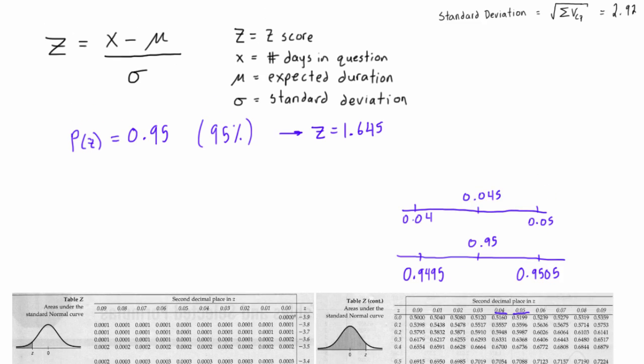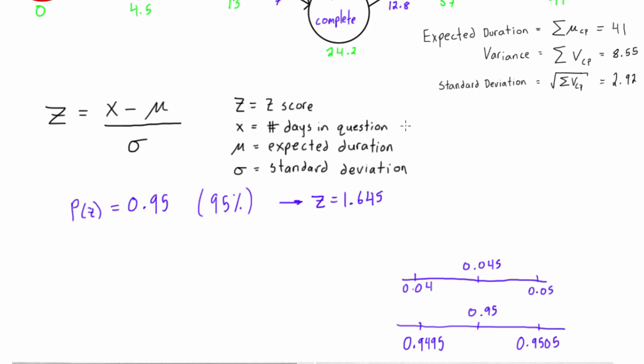All right, so now we have the z-score. Now what we're looking for is the project completion date with a 95% confidence level. We do know the expected duration is 41 and the project standard deviation is 2.92.